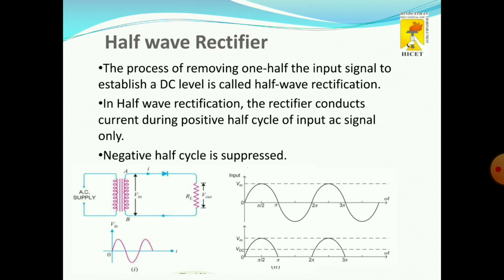In half wave rectifier operation, the rectifier conducts only during the positive cycle. The negative cycle is suppressed. A half wave rectifier consists of a transformer, a diode, and a resistive load RL.